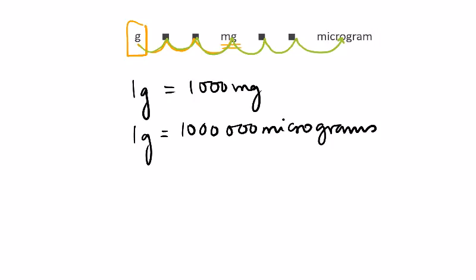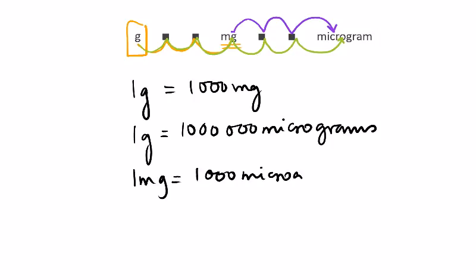Looking at the relationship between milligrams and micrograms: one milligram divided into ten, hundred, thousand parts gives a thousand micrograms. So one milligram equals a thousand micrograms. We can keep those relationships in mind, but we can always use this chart to remember and make the conversions.